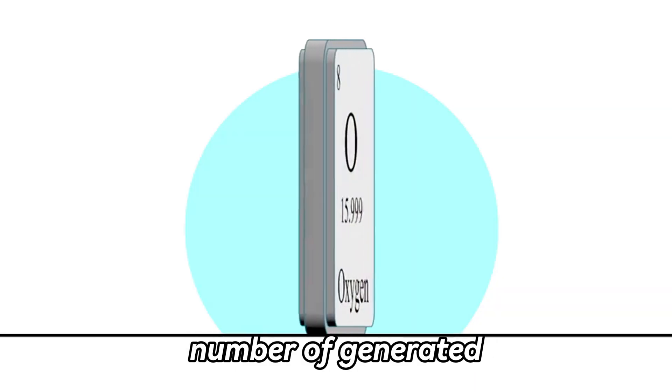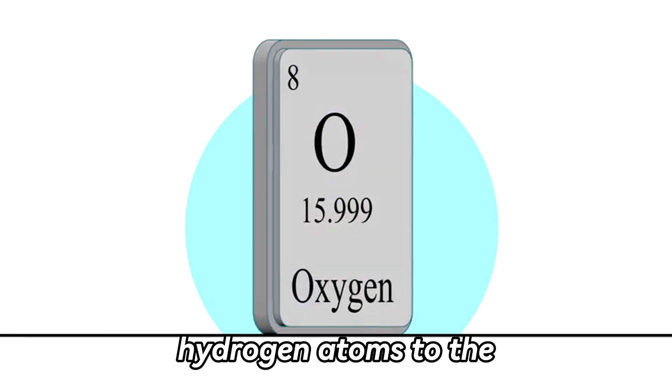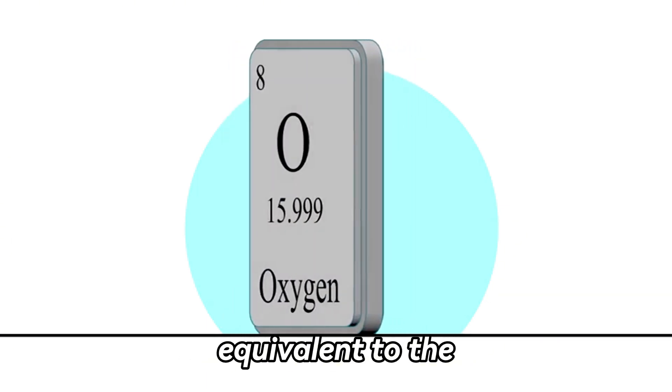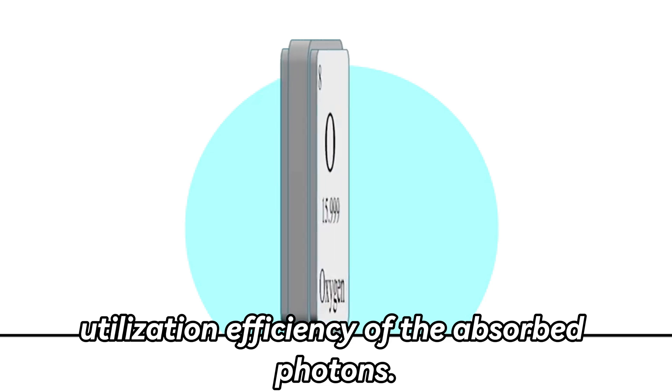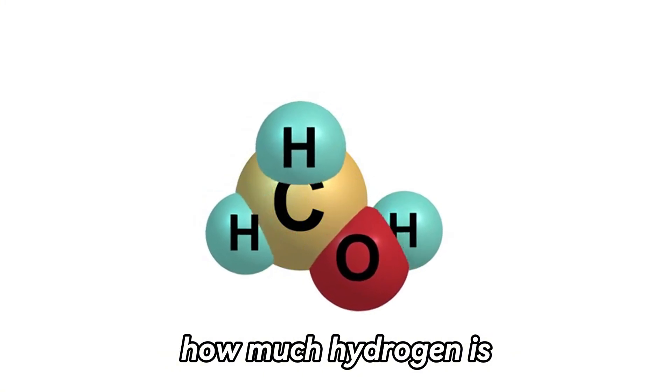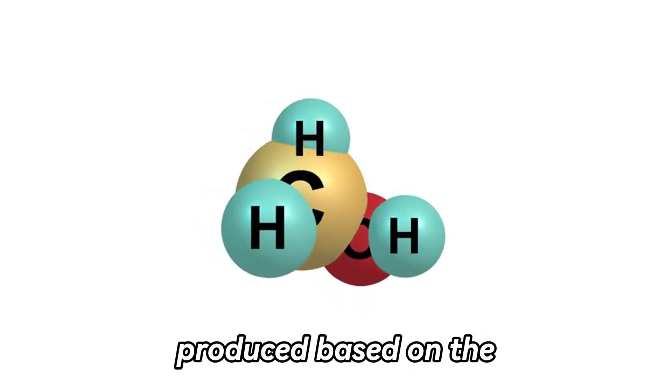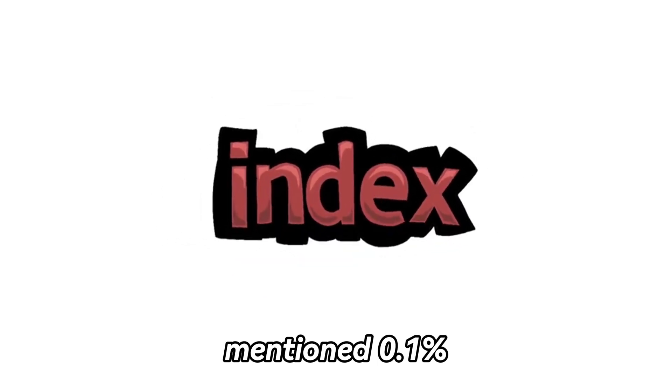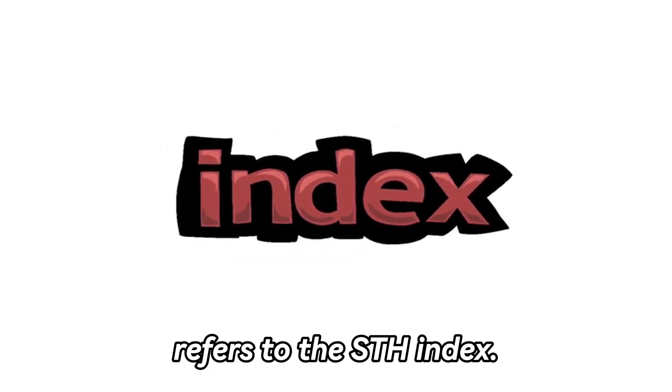What do these specific figures mean? AQY is the ratio of the number of generated hydrogen atoms to the number of absorbed photons, which is equivalent to the utilization efficiency of the absorbed photons. And STH is the energy conversion efficiency of the entire system. That is, how much hydrogen is produced based on the amount of light irradiated.